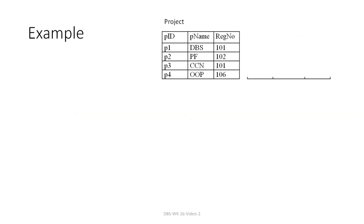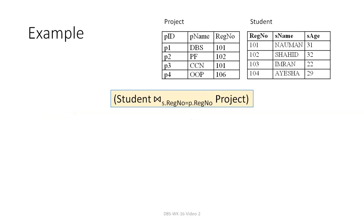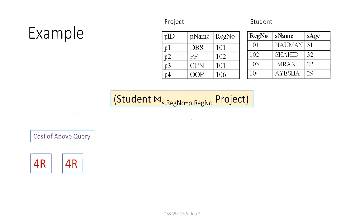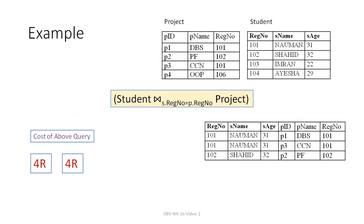Next query: this one has no projection. So you just read student and project, pass the result directly to the user. Student read — 4 operations. Project read — 4 operations. No further operations needed — since there is no further operation, we don't need to store intermediate results.